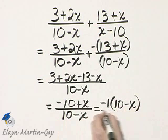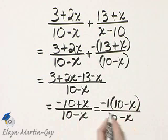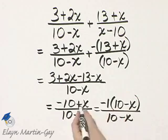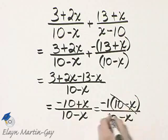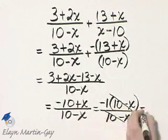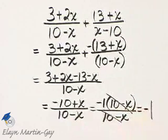Always double check. Negative 1 times 10 is negative 10, and then that's plus x like I have. So these will divide out, and the result is negative 1.